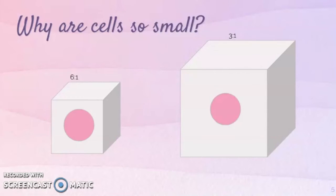Prokaryotic cells are much smaller than eukaryotic cells. Why in general are cells so small? We know that as a cell increases in size, its surface area to volume ratio decreases. When there is not enough surface area to support a cell's increasing volume, a cell is either going to have to divide or it's going to die, because we have a decreased rate of chemical exchange when the surface area to volume ratio is low.